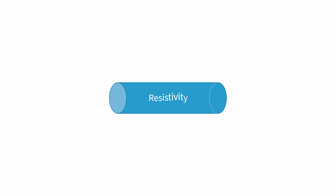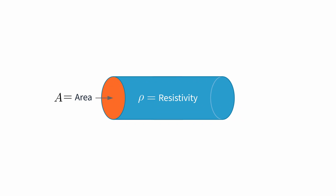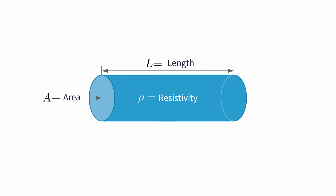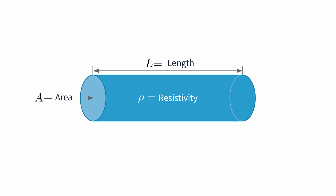We need to remember that resistance is dependent on three factors. First is resistivity, or the inherent characteristic of a material to resist the flow of electricity — represented in equations by the Greek letter rho, which looks a lot like a 'p'. Second is the cross-sectional area of the material; the bigger the area, the greater the amount of current that can flow through it. Finally, there's the length of the material: the longer the object, the more distance the electrons have to travel through that specific resistivity, increasing the overall resistance.